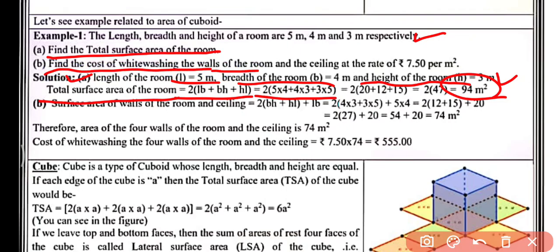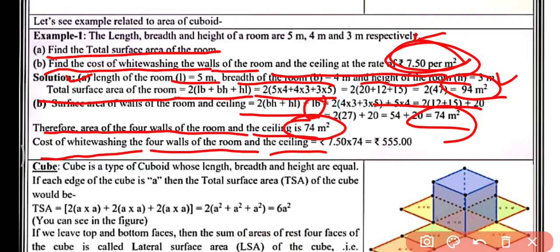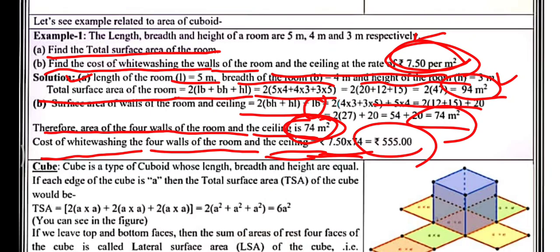Now find the cost of white washing the walls of the room and the ceiling at the rate of rupees 7.50 per meter square. The cost of white washing the four walls and ceiling is calculated by finding the area of four walls and ceiling, then multiplying by 7.50. This gives a cost of rupees 555.